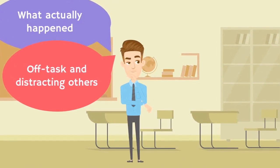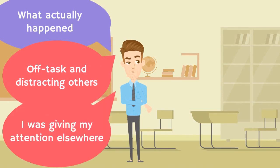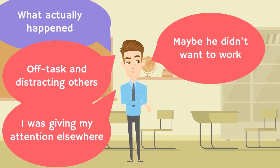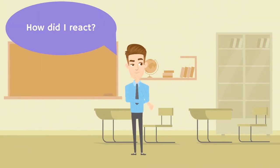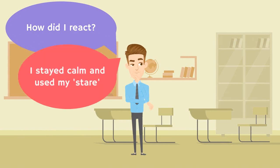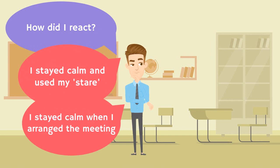What did the student do in the second clip? Charles was off task and began to drum on the table, distracting the teacher and others. The trigger may have been the simple fact that the teacher was giving attention to another student at the time. He may have just wanted to avoid doing the work. Although the teacher's stare worked and Charles got back on task pretty much straight away, it happened again a few minutes later. How did the teacher react? He calmly made his disapproval clear, emotionally and without any words or provocation. He also remained calm and matter-of-fact the second time, whilst arranging to meet Charles after class.